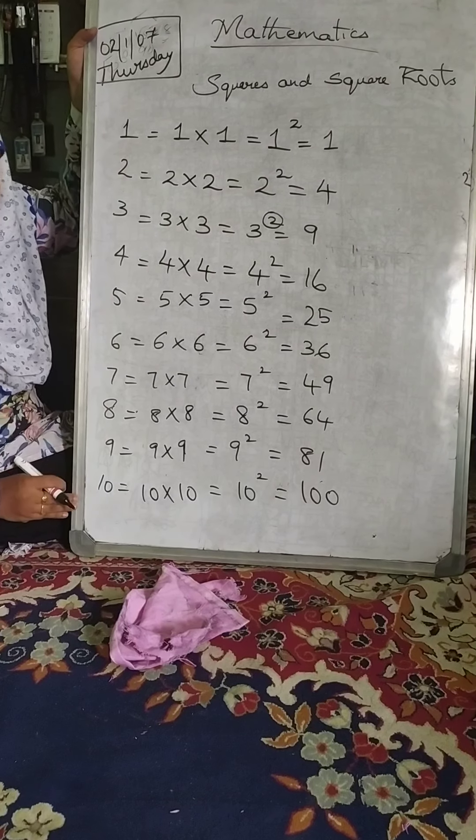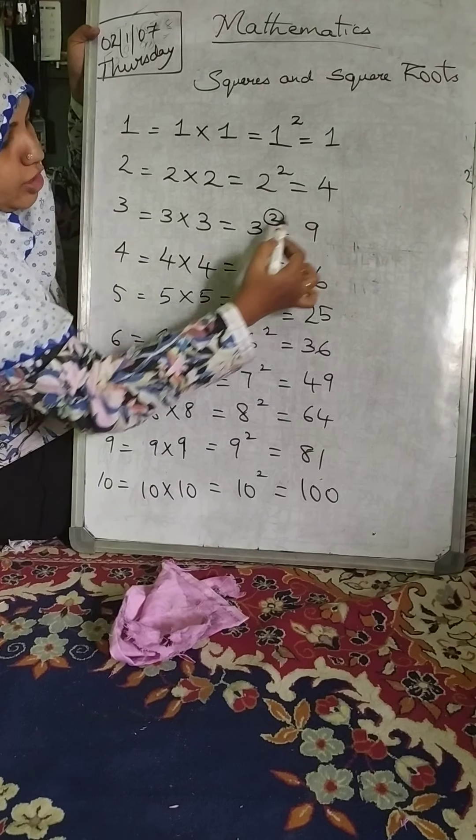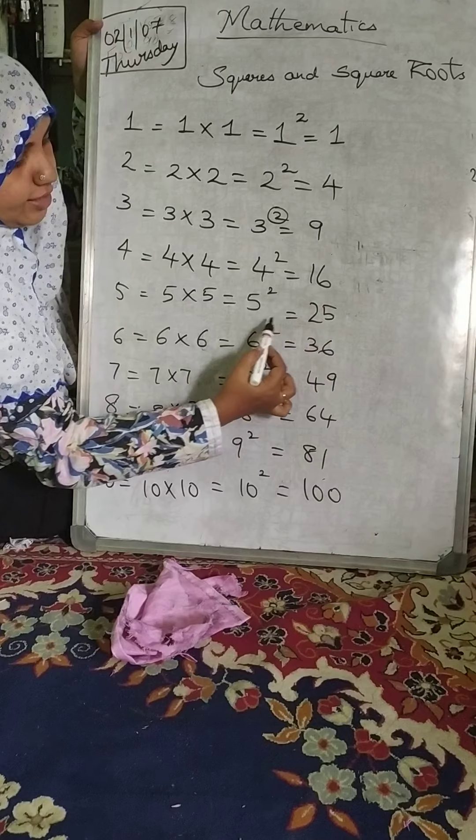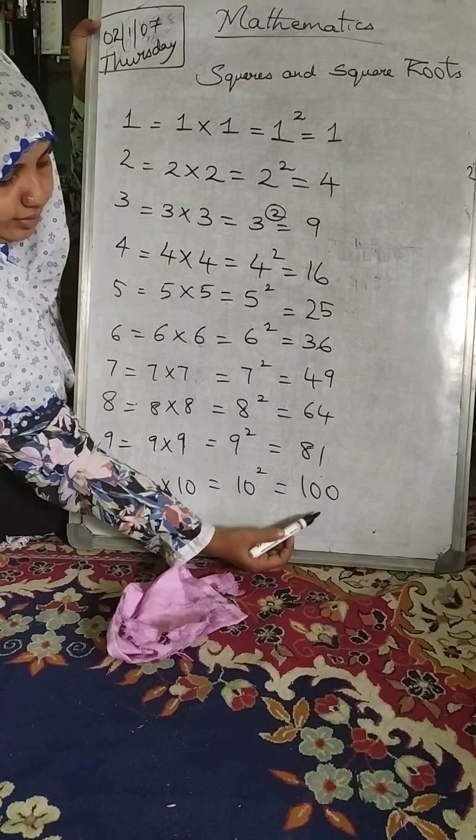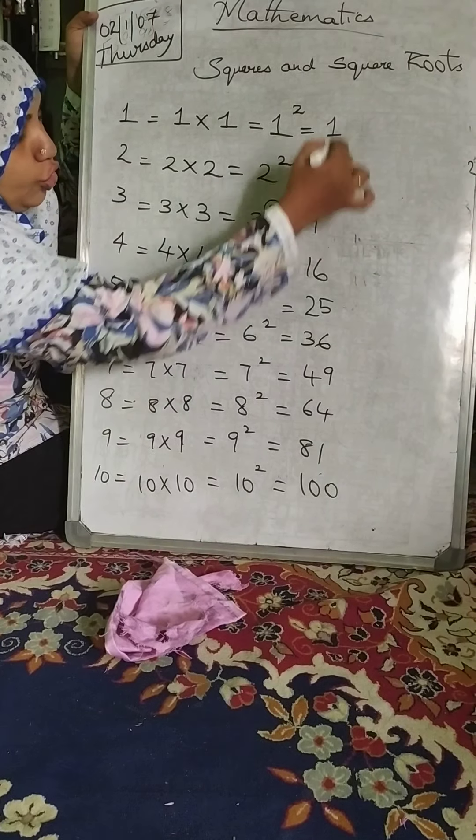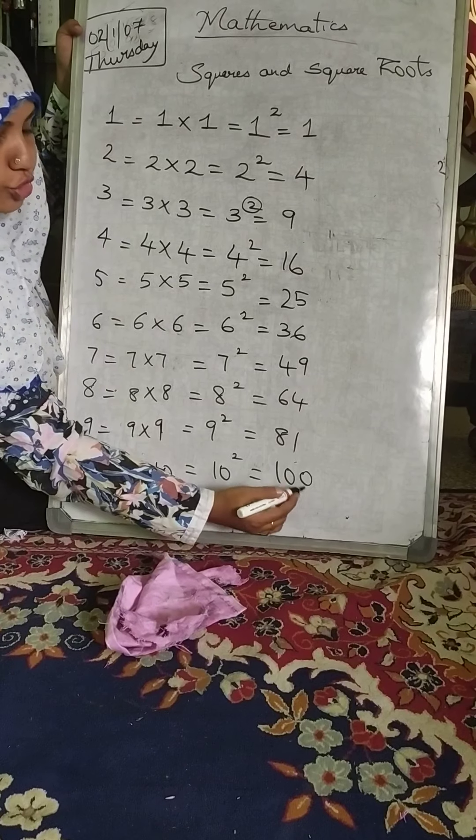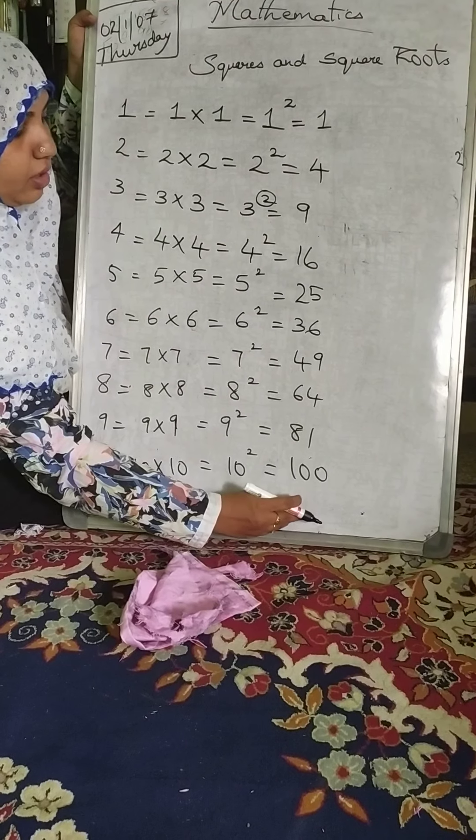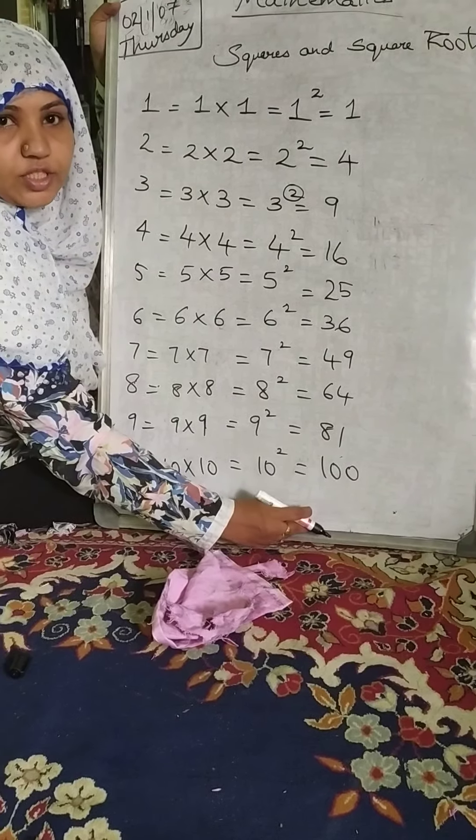Squares of all numbers till 10 children. 1 square is 1, 2 square is 4, 3 square is 9, 4 square is 16, 5 square is 25 and till 10 square. 10 square is 100. You should know them, memorize them children, you should know them by heart. You should not be struggling when we ask you what is 7×7 or 7 square.